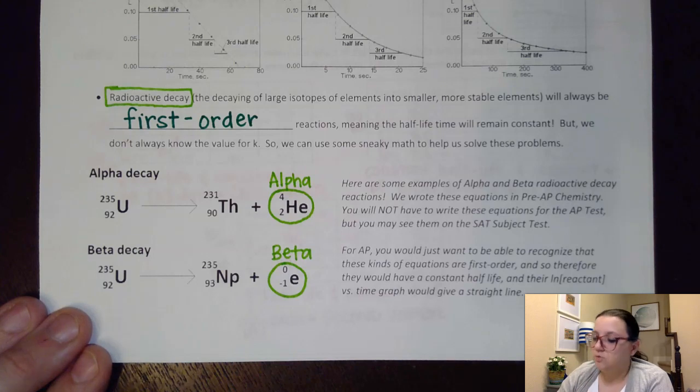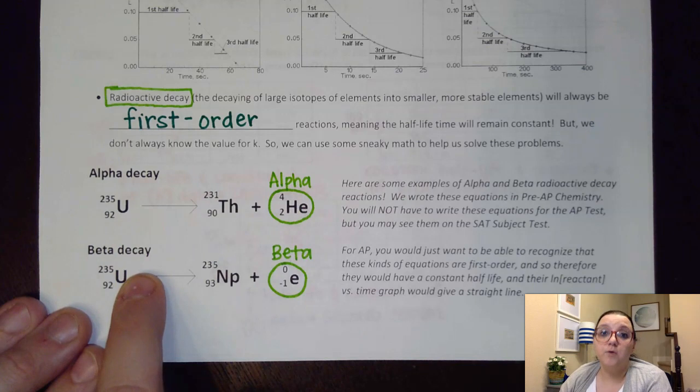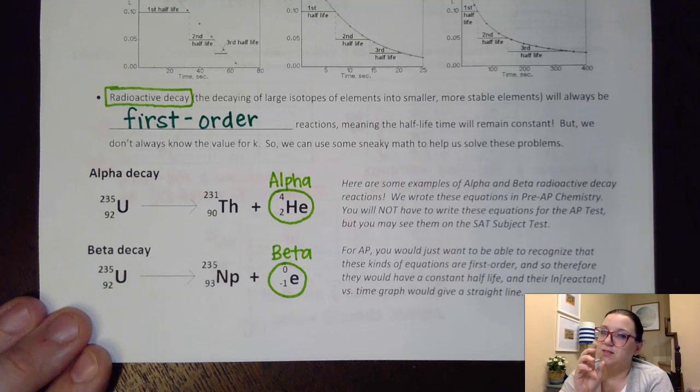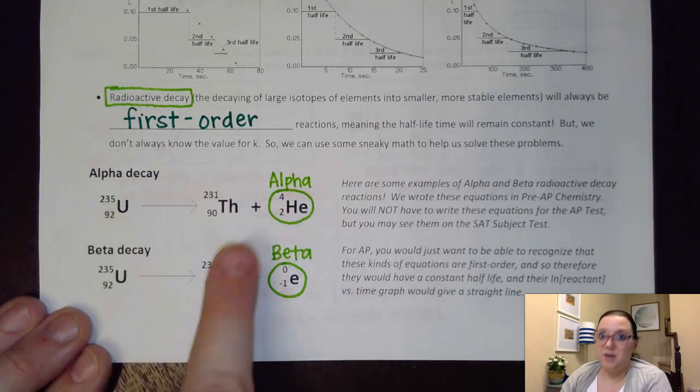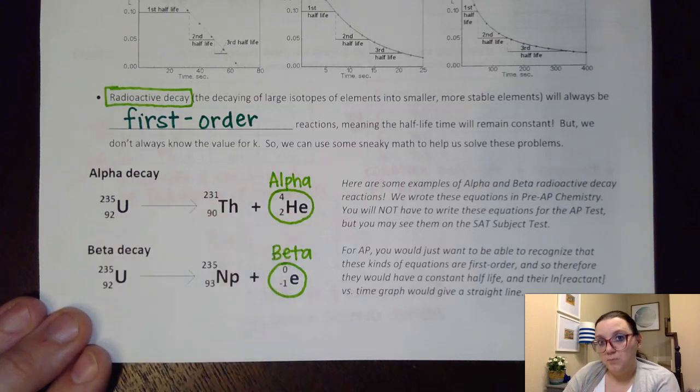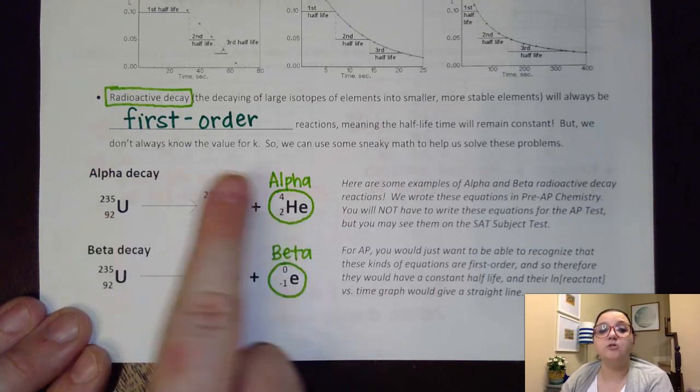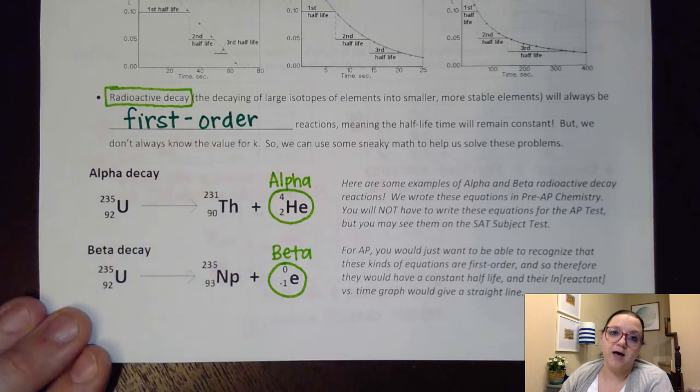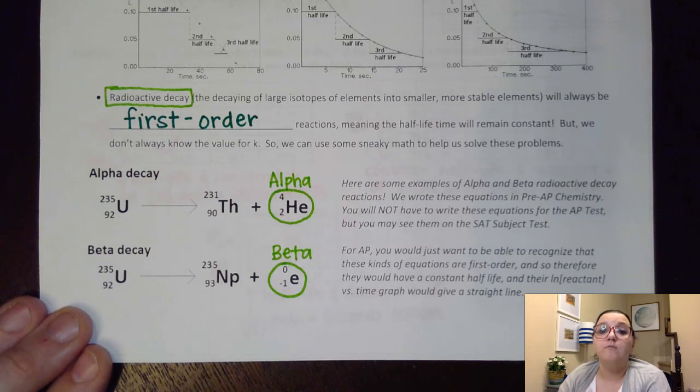Now, I have kind of good news for us. You do not need to be able to write these equations for the AP test. This is something that we did in pre-AP that the state of Texas requires us to do, but we do not need to know how to do that for the AP test. However, I will warn you, if you're taking the SAT subject test for chemistry, you might be asked to write and balance a nuclear decay reaction. What we want to recognize is that if I see one of these reactions already written, that it would be a first-order reaction. Or if they discuss an isotope decaying, that that would be first-order. And so therefore, it would have a constant half-life time. Its natural log versus its time graph would be the straight line. I could use the 0.693 over K to calculate the time. There's all kinds of things I can do once I recognize that it's first-order.